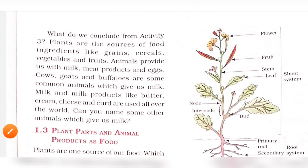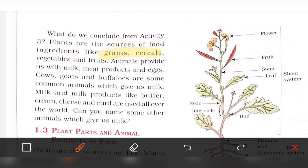Plants are the sources of food ingredients like grains, cereals, vegetables, and fruits. Animals also provide food for us — milk, meat products, and eggs. Cows, goats, and buffalos are some common animals which give us milk. Milk products like butter, cream, cheese, and curd are used all over the world.